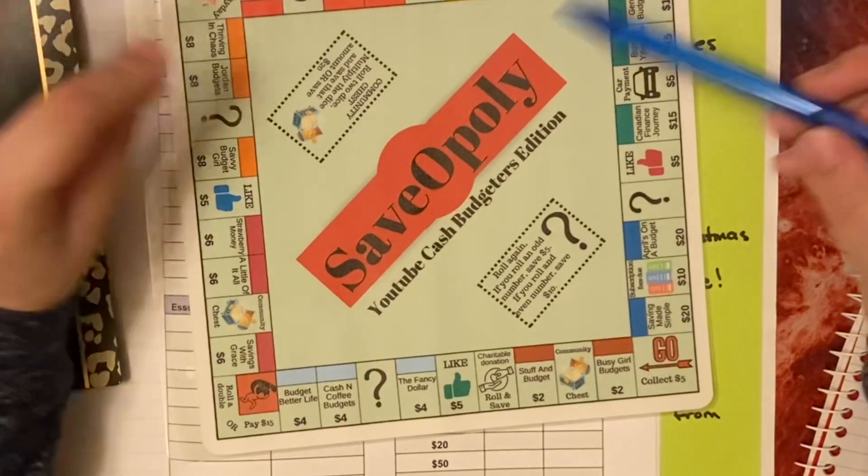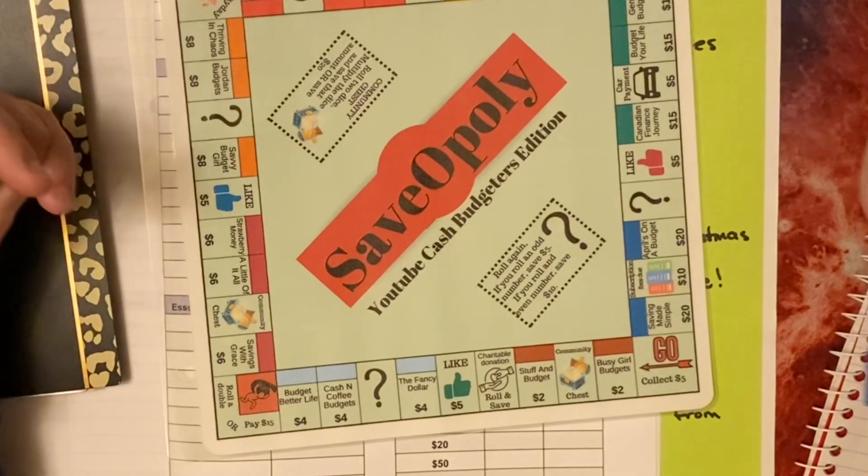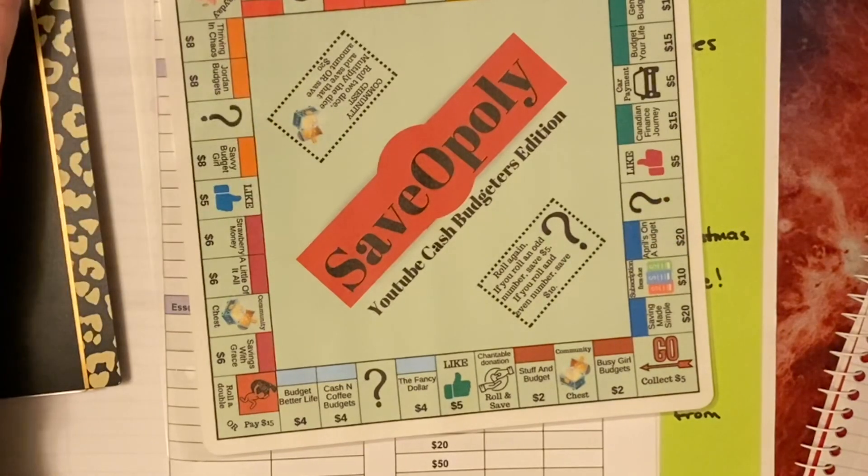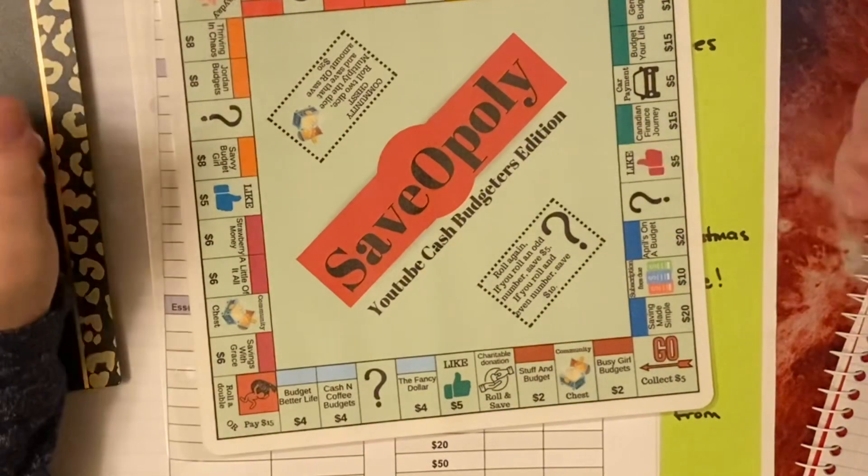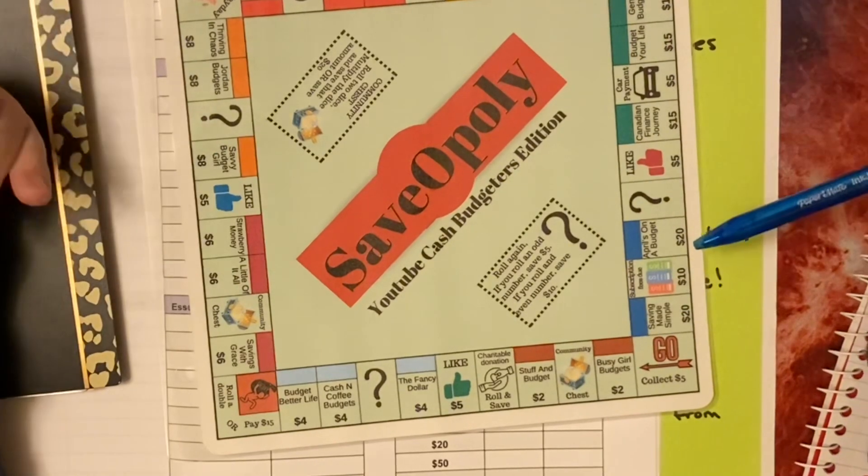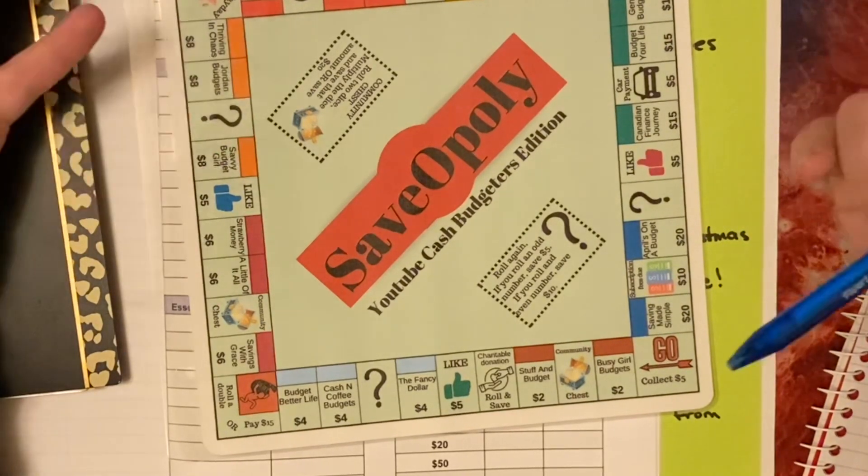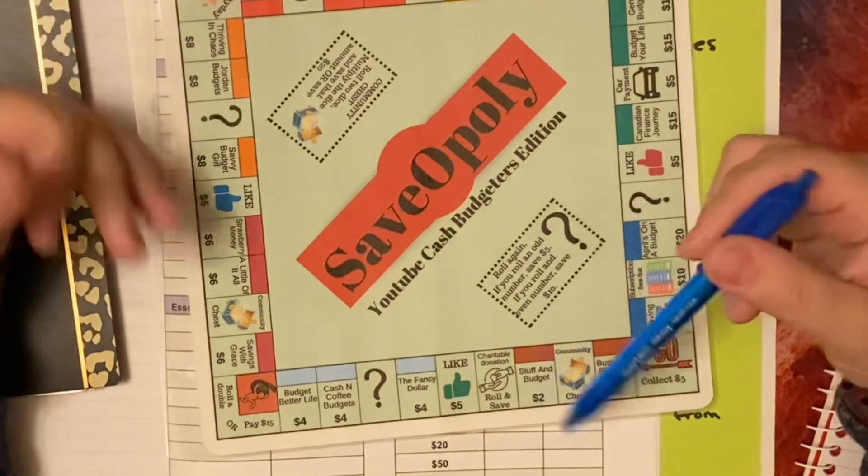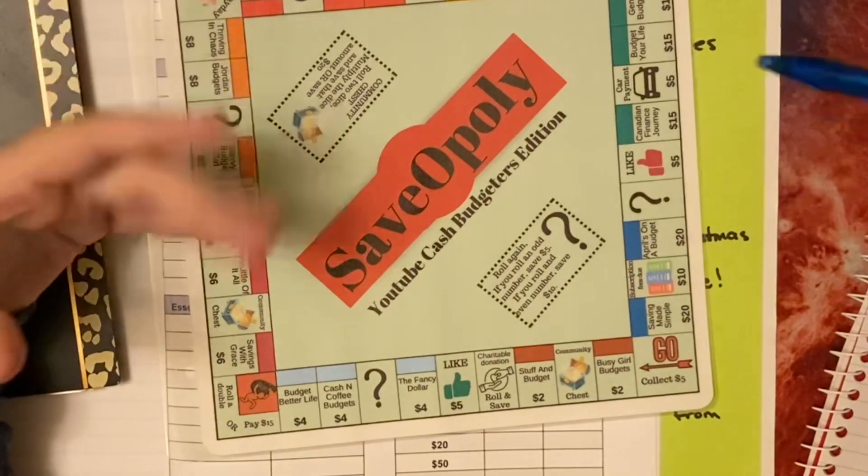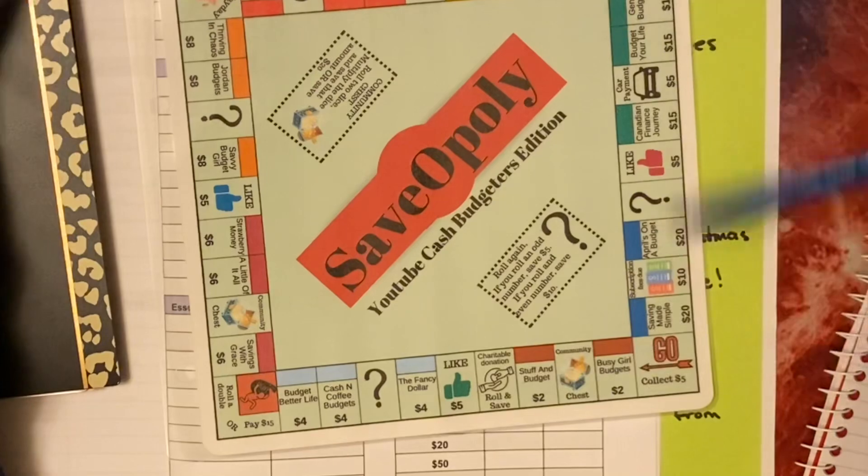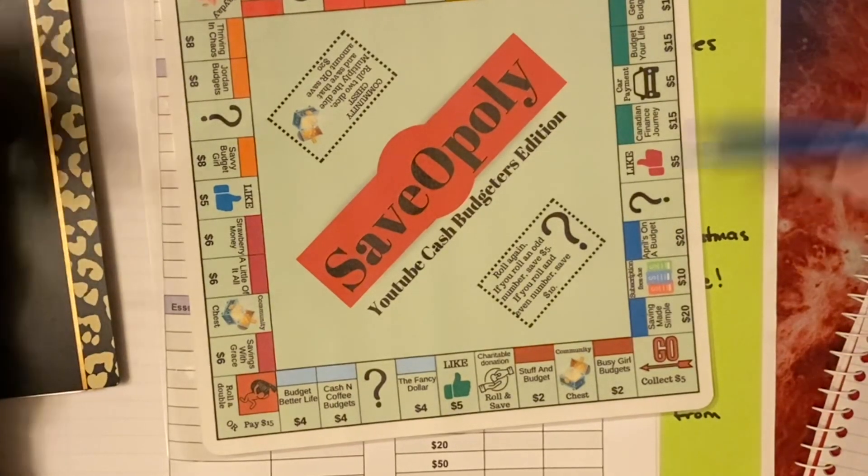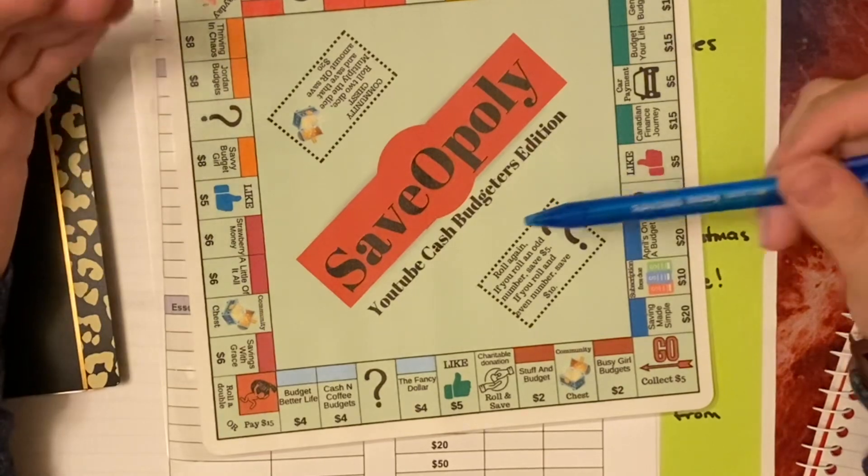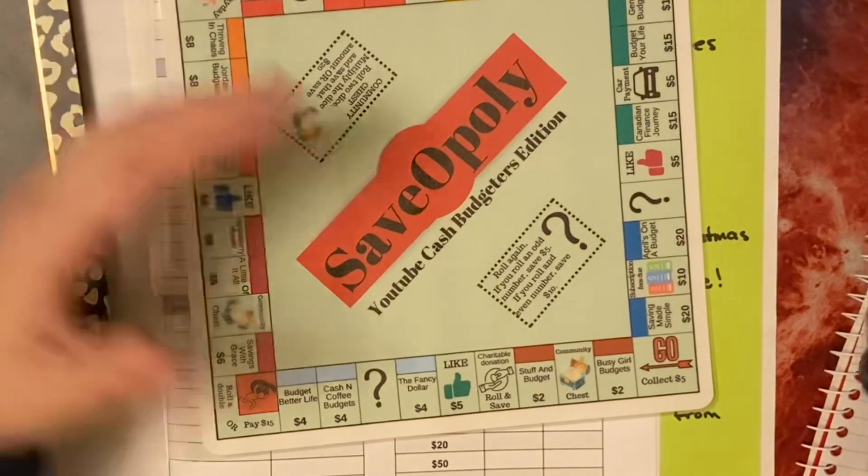I'll go through them really quickly. We've got Busy Girl Budgets, Stuff and Budget, Fancy Dollar, Cash and Coffee Budgets, Budget Better Life, Saving with Grace, A Little Love it All, Strawberry Money, Savvy Budget Girl, Jordan Budgets, Thriving in Chaos, The Aesthetic Dollar, Budgeting Just Because, Can Do Budgeting, Baddies and Budgeting, Via's Life and Envelopes, Donna Powered by Creativity, Gen X Budgets, Budget Your Life, Canadian Finance Journey, April's on a Budget, and my own channel because I want to include me too.